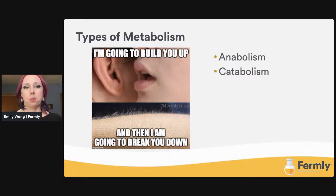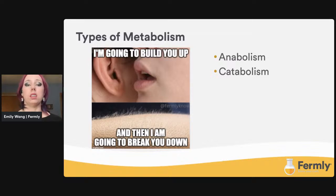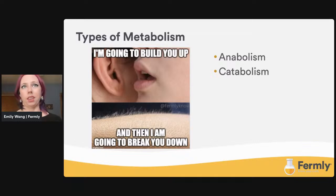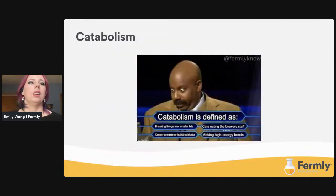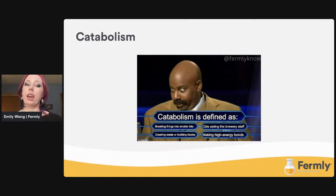For the types of metabolism: we have anabolism, which is the creating of new compounds. A real-world example is anabolic steroids used in sports — anabolic means building up muscle, so think of athletes to remember anabolism. Catabolism is the breaking down of compounds — and we're going to be talking mostly about that. Catabolism breaks things down into small molecules that could be excreted as waste or used to build new molecules, and molecules with high-energy bonds are made to drive other reactions.